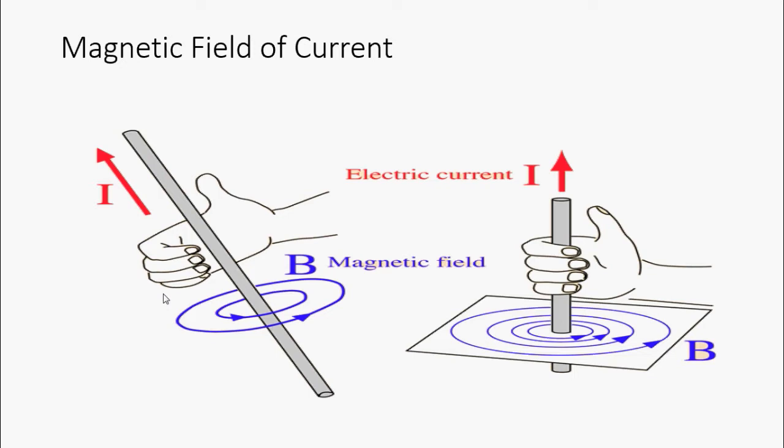The direction of the magnetic field is perpendicular to the wire and is in the direction the fingers of your right hand would curl if you wrap them around the wire with your thumb in the direction of the current, as shown on these pictures.